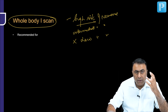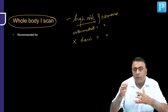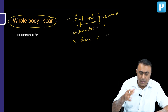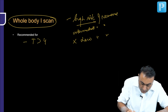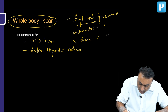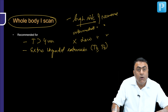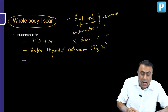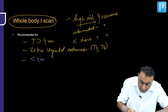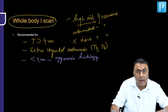Which patients are candidates for a whole body iodine scan and radioactive iodine ablation? It is recommended in patients with a tumor size of more than four centimeters, patients with extra-thyroidal extension — T3 or T4 disease — and patients with tumor less than four centimeters but associated with aggressive histology.